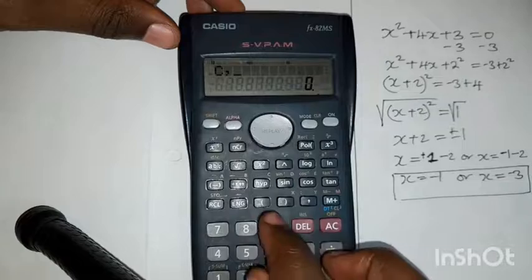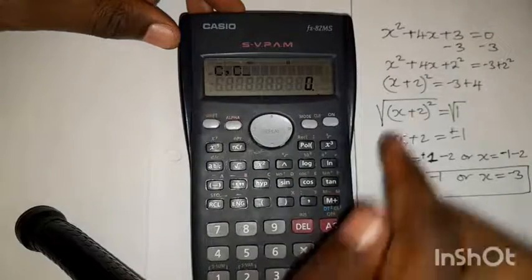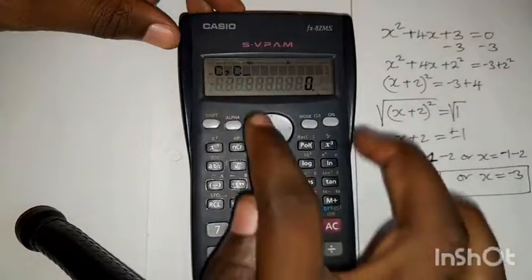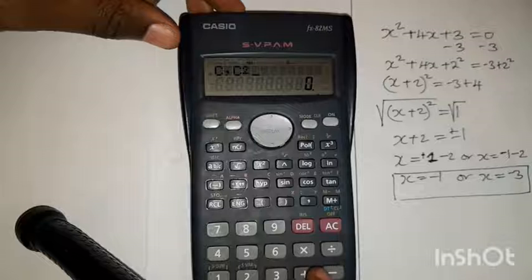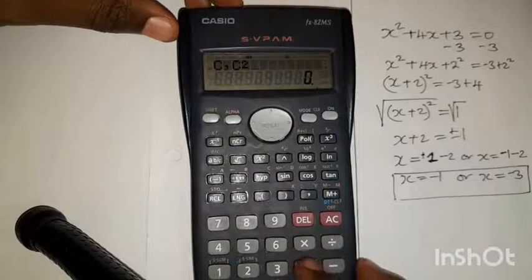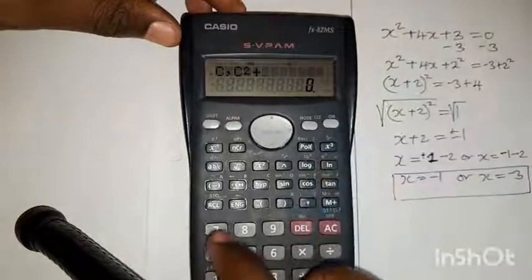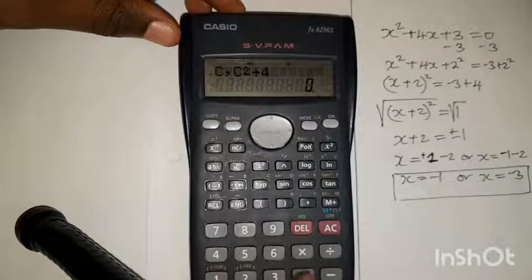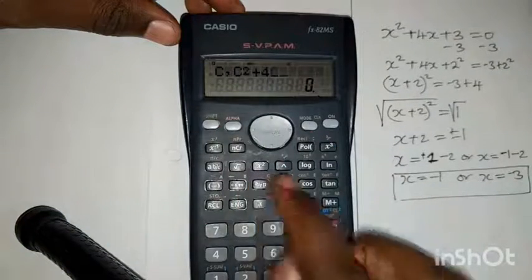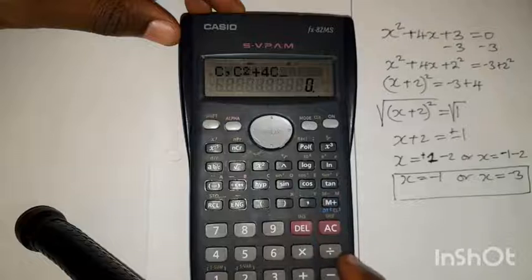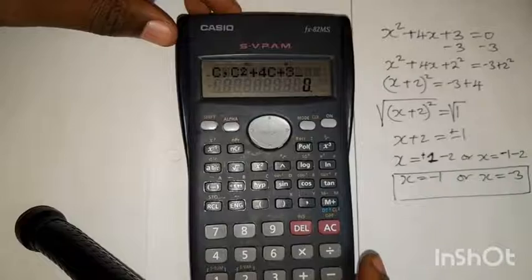Then let's just write this quadratic equation on the calculator. So we are going to press alpha, then C. Now we are writing this quadratic equation. C squared, so press here where it is squared. Then plus, you write a plus as it is, plus 4. The 4 also is just as it is. Then X, you are going to press alpha, C again, then plus 3 as it is like this.